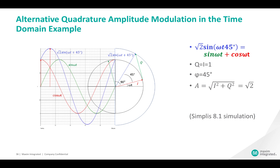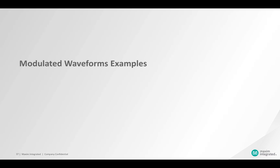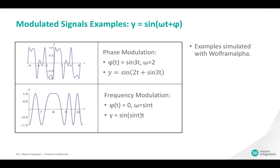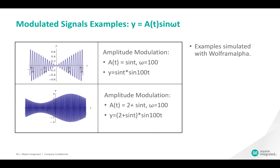Here we see an illustration of quadrature modulation in the time domain for the case where q and i both equal one. Let's look at a few examples of modulated waveforms. Here we have two cases of modulated signals: phase modulation and frequency modulation. These waveforms were obtained using Wolfram Alpha. Here we also have two cases of amplitude modulated signals, again obtained with Wolfram Alpha. It's always a good idea to visualize these in the time domain.